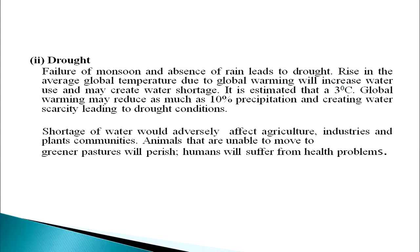Next is drought. Failure of monsoon and absence of rain leads to drought. Rise in average global temperature due to global warming will increase water use and may create water shortage. It is estimated that a 3-degree Celsius global warming may reduce as much as 10 percent precipitation, creating water scarcity and leading to drought conditions. Shortage of water would adversely affect agriculture, industries, and plant communities. Animals unable to move to greener pastures will perish, and humans will suffer from health problems.